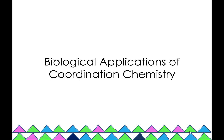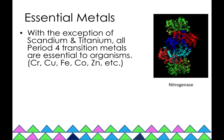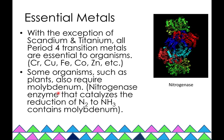In this lecture, we're going to talk about the biological applications of coordination chemistry. There are so many examples, so we're just going to discuss a few of them. The first row of transition metals — such as chromium, copper, iron, and cobalt — are all essential to organisms, with the exception of scandium and titanium. Some organisms, such as plants, also require molybdenum.